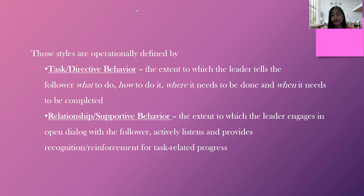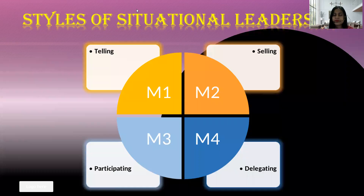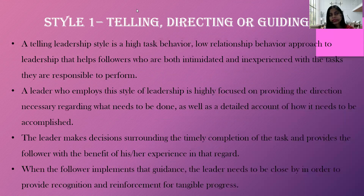All these things need to be decided, discussed, and determined properly. The four quadrants are divided into those two dimensions: task and directive behavior, and relationship and support behavior. Now we are going to start with the different styles of situational leadership: telling, selling, participating, and delegating.